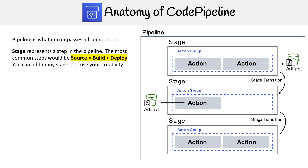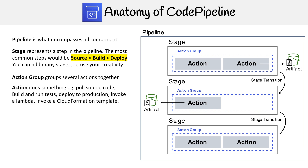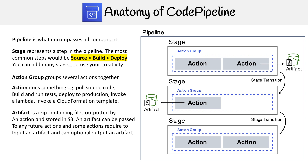After that, you can set up as many stages as you like, so there's a lot of creativity here — you don't have to be limited to those three. Then you have action groups, which group together several actions. And then you have actions, which do something: they can pull code, build and run tests, deploy code to production, invoke a Lambda, invoke CloudFormation templates — a lot of things you can do there.